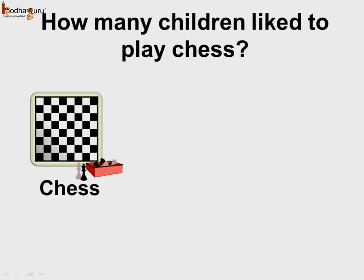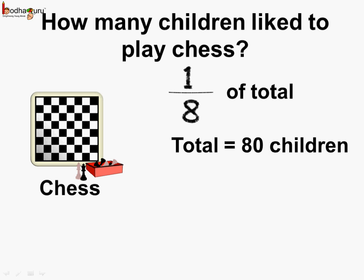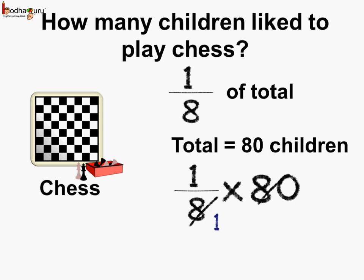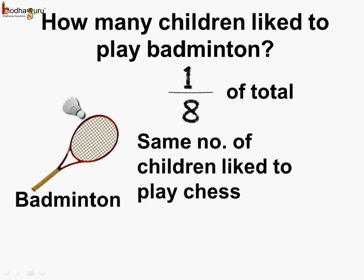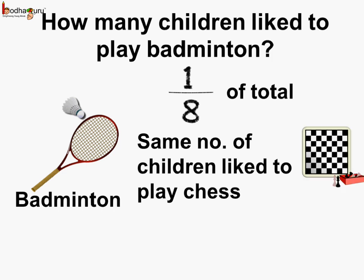Can you tell how many children like to play chess? We know 1 by 8 of the total like to play chess and the total was 80 children. So 1 by 8 of 80: 8 ones are 8 and 8 tens are 80, so 10 children like to play chess. For badminton, we know 1 eighth of the total like to play badminton — the same fraction as chess — and since 10 children liked chess, 10 children liked badminton too.